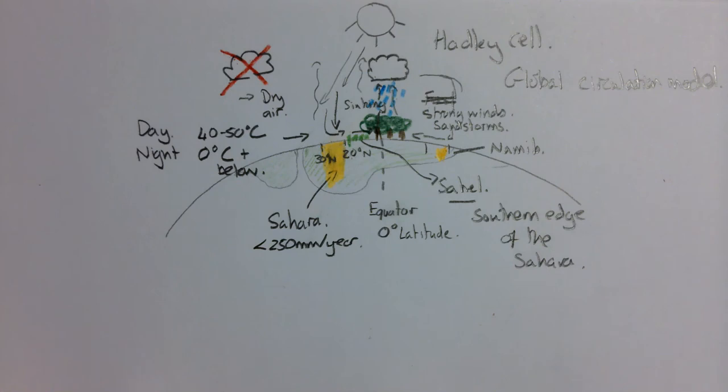What kind of biome or environment will I find along the southern edge of the Sahara, in between the desert and the rainforest? Good. That is the Sahel. Excellent stuff. Well done.